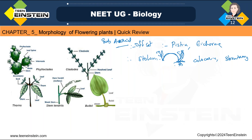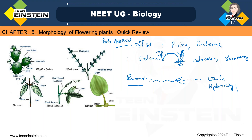Next is runner. Runner is a weak stem or weak branch growing horizontally above the soil surface — it can only run through the soil. It develops adventitious roots at each node. Examples: Oxalis, Hydrocotyle.